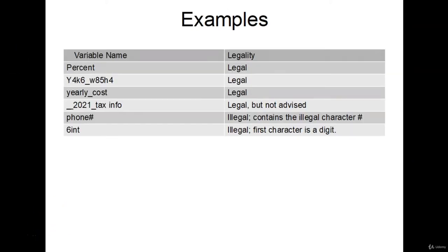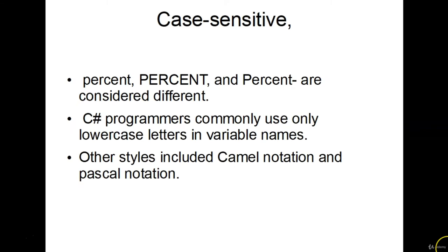Let's look at some examples. The first one, 'Percent' with a capital P and the rest lowercase — perfectly legal. Same thing with a capital Y, an underscore, some numbers, all lowercase letters — perfectly legal. Same with 'yearly_cost.' The next two variables are illegal: one contains an illegal character, and the last starts with a digit. C# is a case-sensitive language, so 'percent' all lowercase, 'PERCENT' all uppercase, and 'Percent' with a capital P are all considered different variables. It's common for C# programmers to only use lowercase letters when declaring variables.